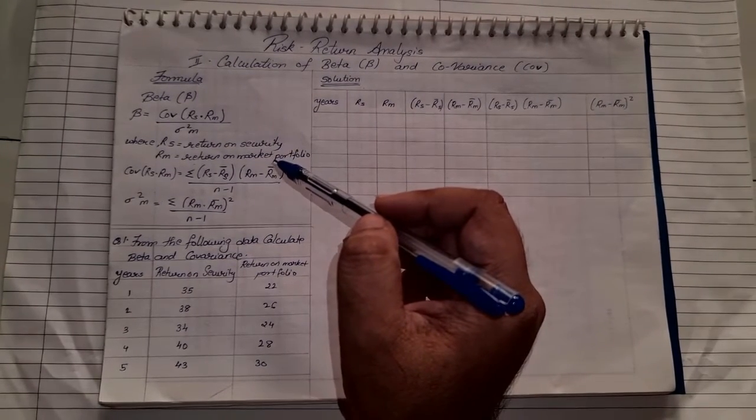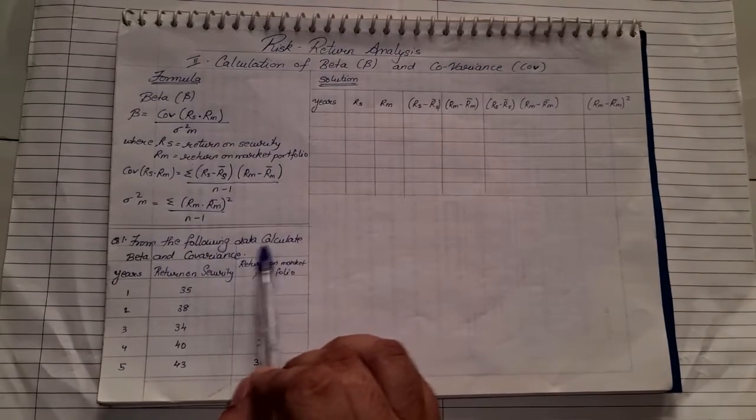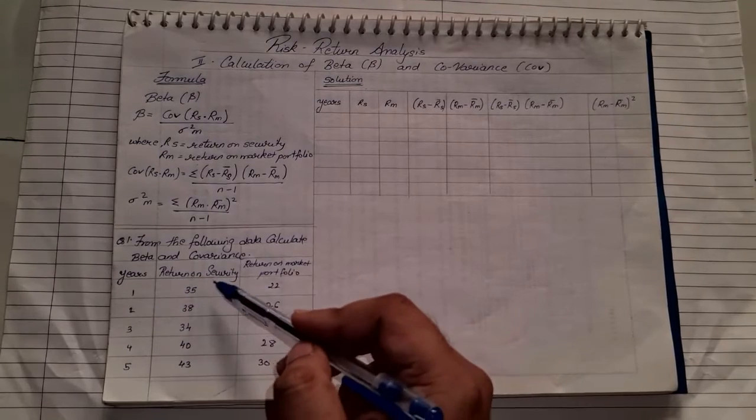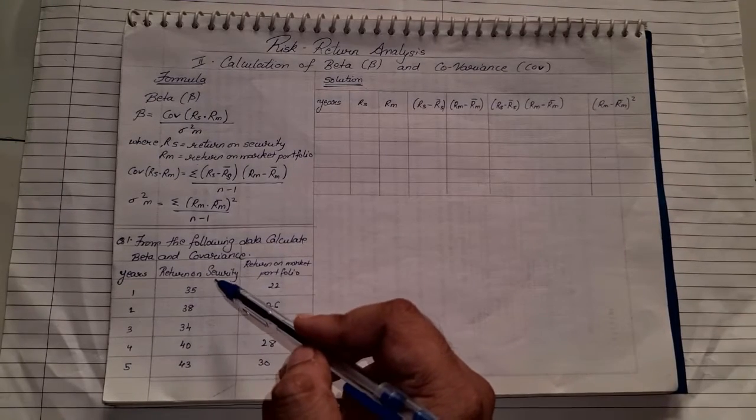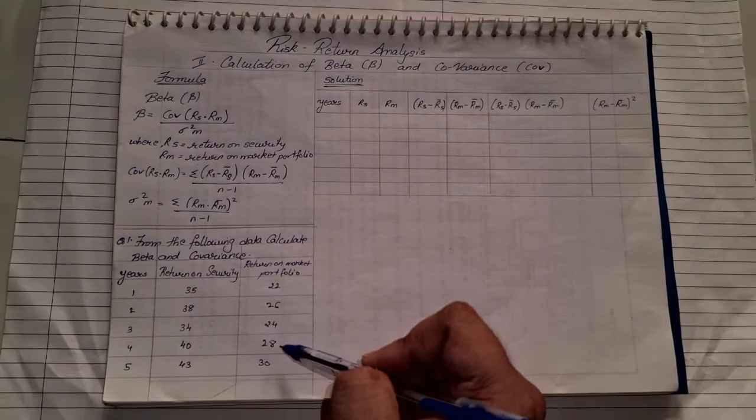So let us see now how to solve the sum. From the following data, calculate beta and covariance. They are giving you the number of years and return on security, which we will consider as RS, and return on market portfolio, which will be known as RM.